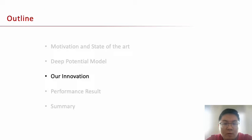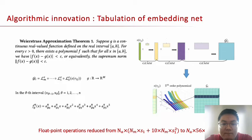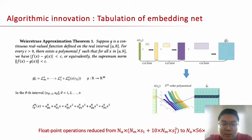Next I will introduce our innovations. Our first innovation is the tabulation of EmbedNets. According to the Weierstrass approximation theorem, for any continuous real-valued function defined on a real interval, we can use a polynomial to approximate it. In our algorithm, the EmbedNet uses matrix multiplications to expand the input dimension from 1 to 128, so we can use 128 polynomials to fit it. To ensure accuracy, the domain of input is equally divided into several intervals, and in each interval we approximate the EmbedNet with 128 fifth-order polynomials. By using the tabulation method, floating point operations are greatly reduced.